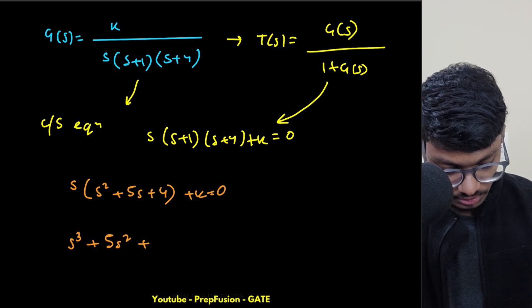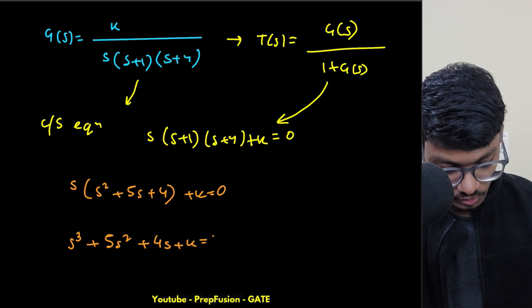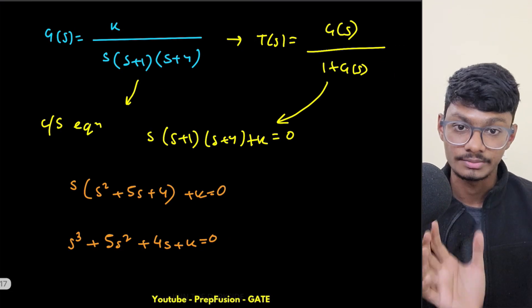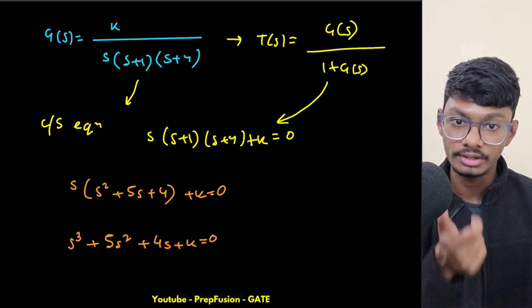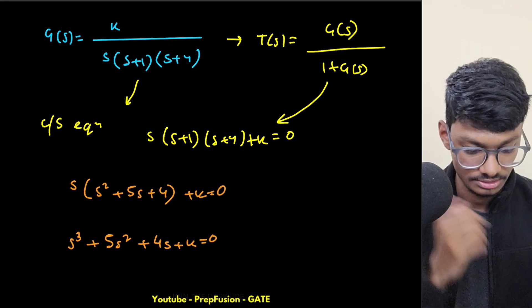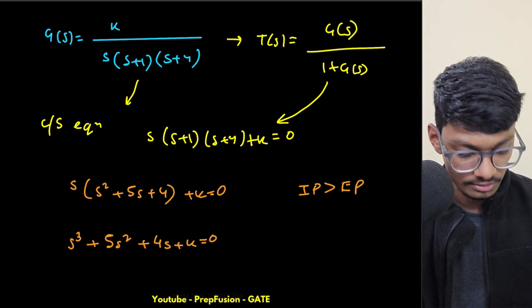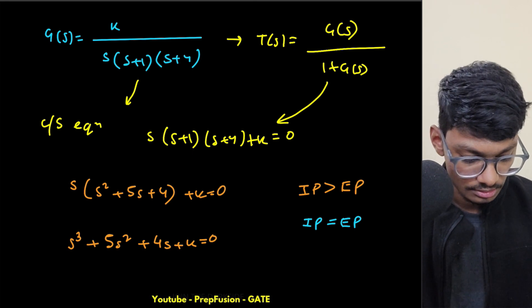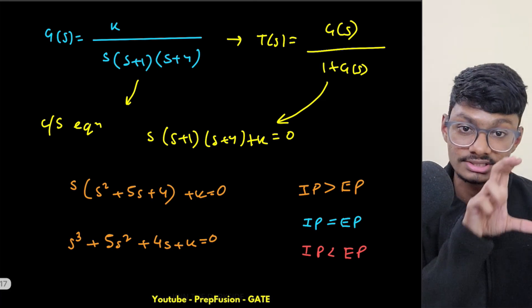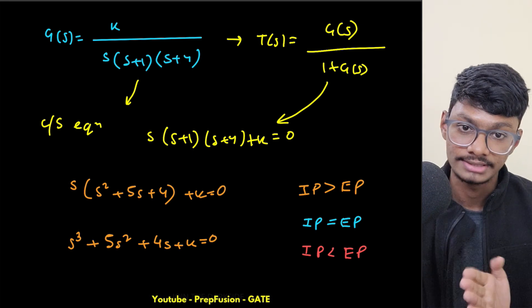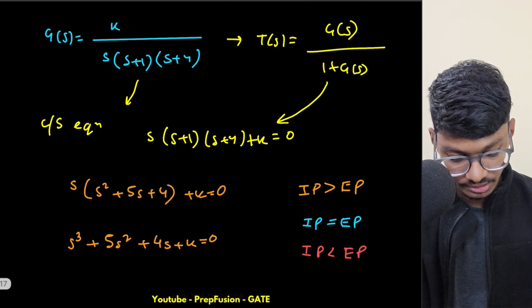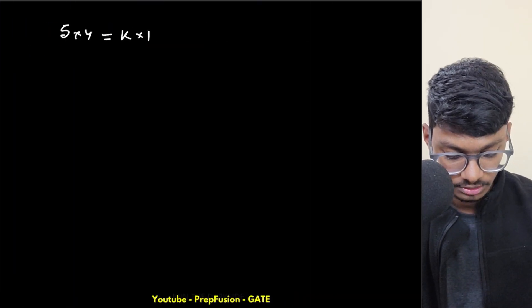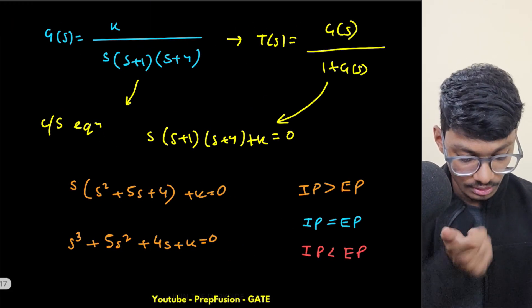Since the root locus crosses the imaginary axis, the system has conjugate imaginary poles, meaning it is marginally stable. For a third-order system, the short trick is: internal product of coefficients equals external product for marginal stability. So the internal product is 5 × 4 = 20, and that equals k × 1, giving k = 20.